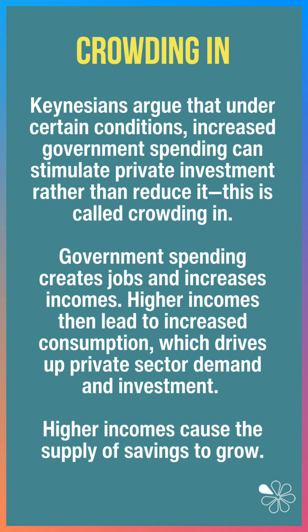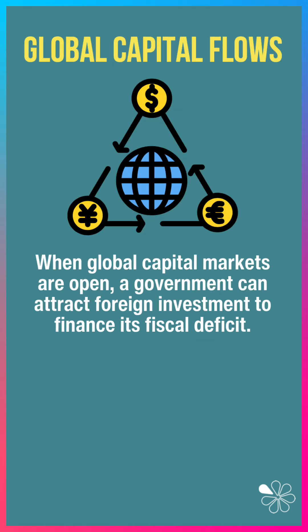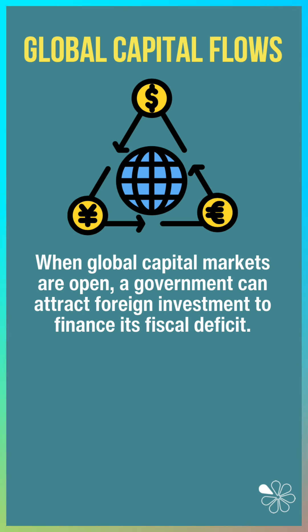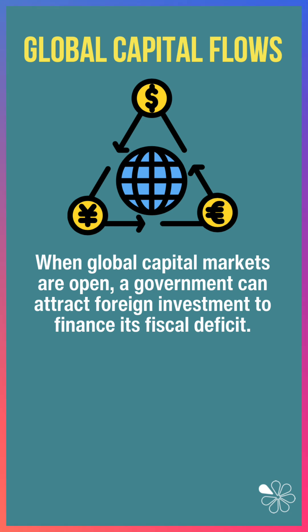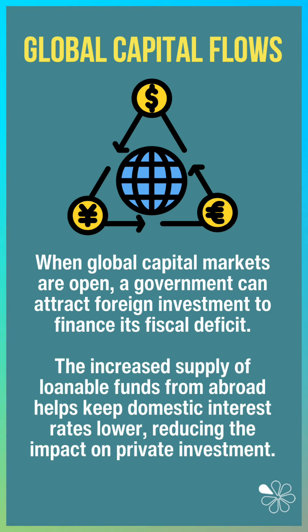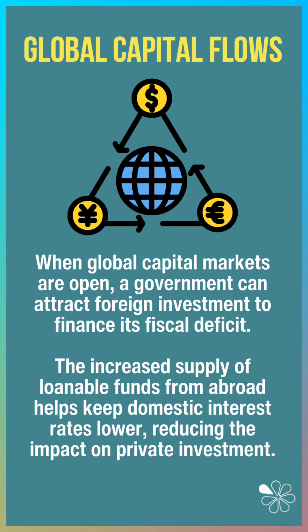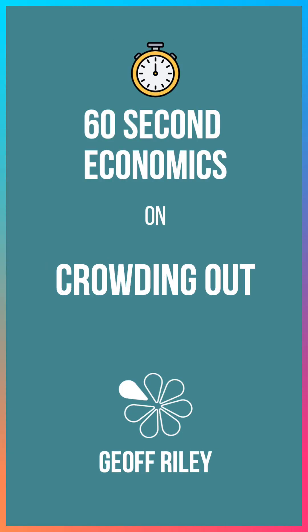And higher incomes cause the supply of savings to grow, which increases the supply of loanable funds. And if we think about global capital flows, when international capital markets are open, a government can attract foreign investment to finance its fiscal deficit. So the increased supply of loanable funds from overseas can help to keep domestic interest rates lower, reducing the crowding out impact on private investment.